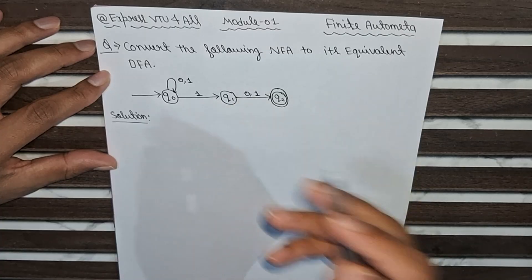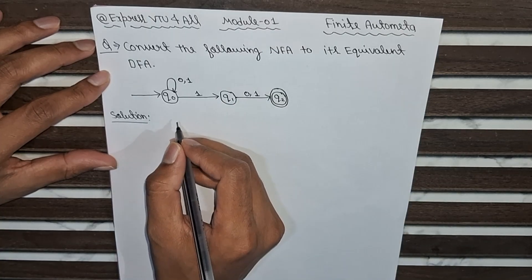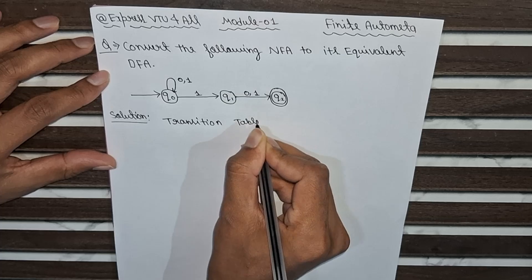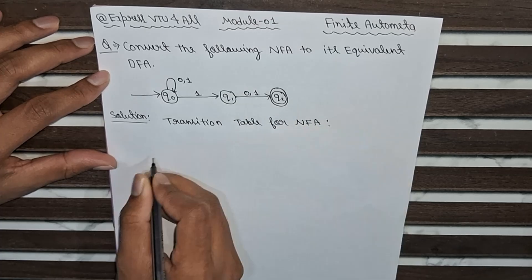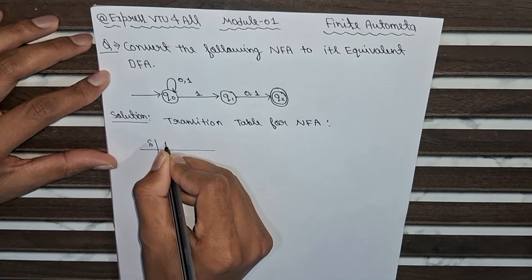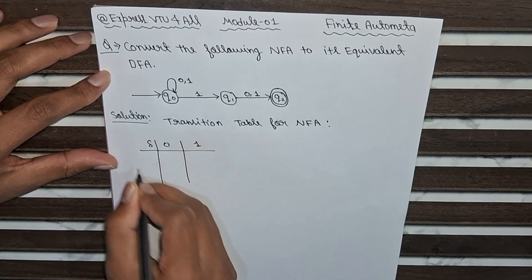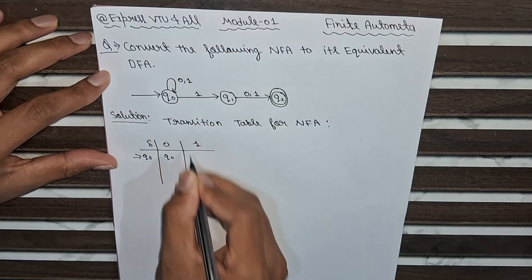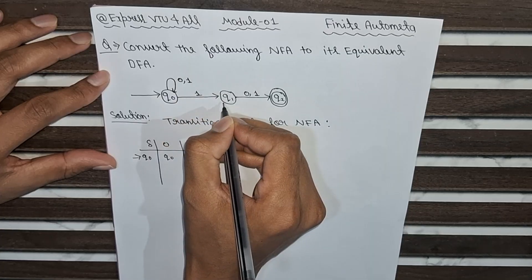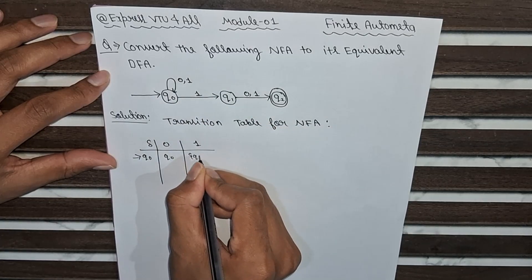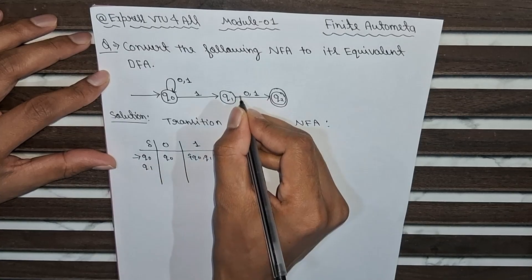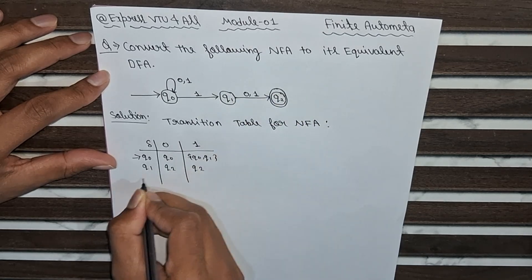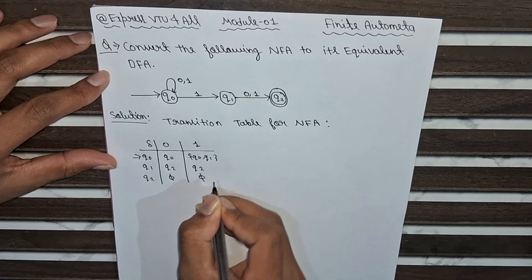We have to convert this into an equivalent DFA. Our first step is to draw the transition table for the NFA. The transition states have input symbols 0 and 1. The initial state q0 with input symbol 0 is a self-loop; with input symbol 1 it goes to q0 and q1. State q1 with input symbol 0 goes to q2; with input symbol 1 it also goes to q2. At q2 there are no transitions for any input symbol.